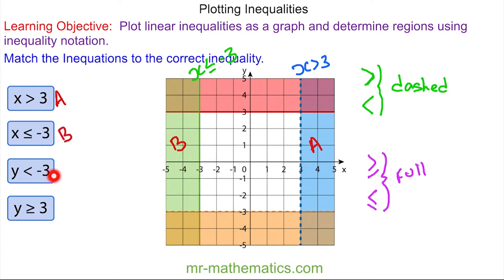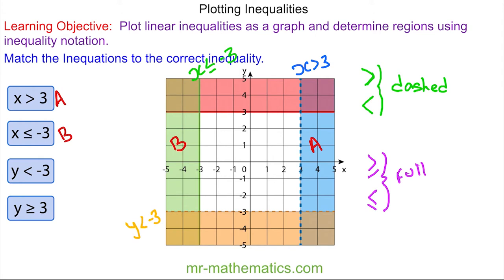For our third inequality, y is less than negative 3. Here is when y is negative 3, and this time the x values change but the y is always negative 3. And because it is a dashed line and the numbers are getting smaller in that coloured region, the inequality is y is less than negative 3. Less than because the numbers are getting smaller and the line is dashed. So this inequality matches with this region.